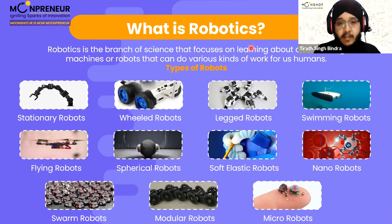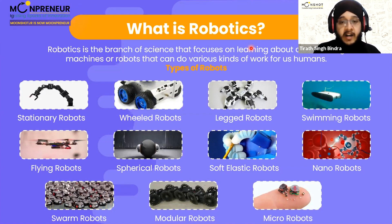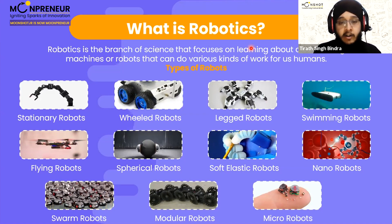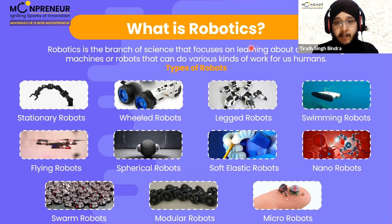In layman's terms, what we do is we first identify a problem or a task which is monotonous, non-productive, and which is taking a lot of our time, and then we try to automate that process using machines or robots.